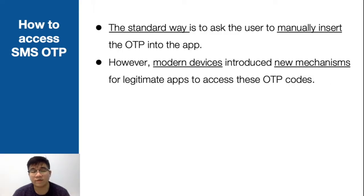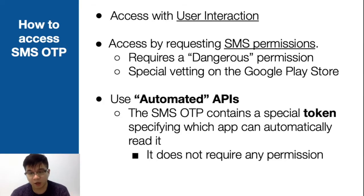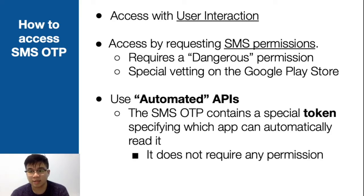As we said before, apps have so many ways to access SMS OTP. The standard way is to ask the user to manually insert the OTP into the app. However, modern devices introduced new mechanisms for legitimate apps to access these OTP codes. We start our study by exploring all the different ways an app can access SMS OTPs in modern Android and iOS versions, and we realized these methods can be divided into three categories: user interaction, SMS permissions, and automated APIs.